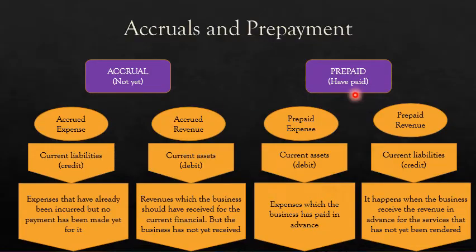If you talk about prepaid, it is something that has already happened in the past. For example, if the item is a prepaid expense, it means the expense has already been paid beyond what you are required to pay — you have overpaid the expenses. And if it is prepaid revenue, it means you have already received more revenue from your customer than you should have.